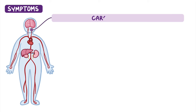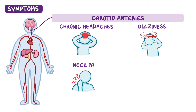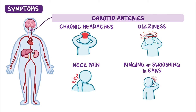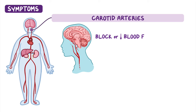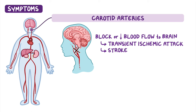If the carotid arteries, which pass through the neck and supply blood to the brain, are affected, symptoms can include chronic headaches, dizziness or vertigo, neck pain, and a pulsatile ringing or swooshing sound in the ears. The narrowing and bulging of the carotid artery can also block or reduce blood flow to the brain, causing a transient ischemic attack or stroke.